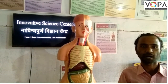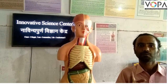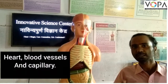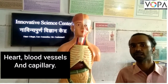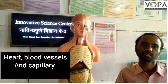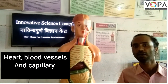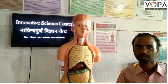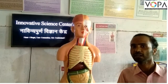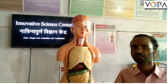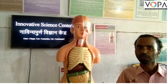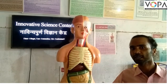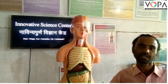The blood circulatory system in our body consists of three parts: the first part is the heart, the second part is the blood vessels, and the third part is the blood capillary. Now we will learn about the structure of the heart.